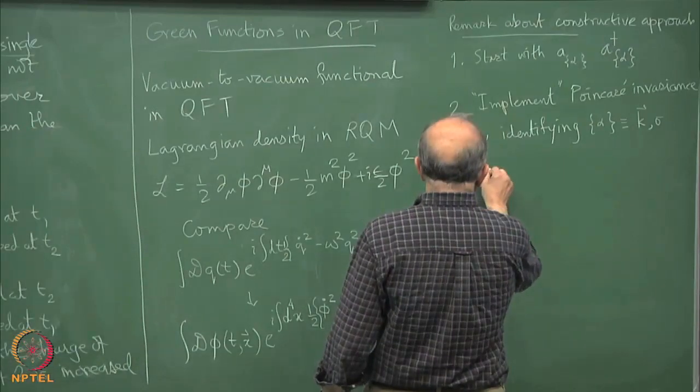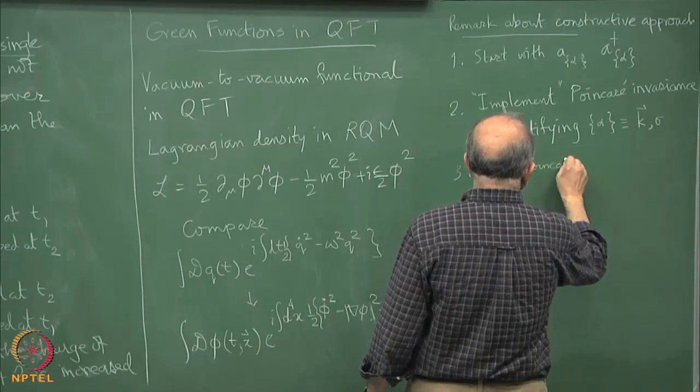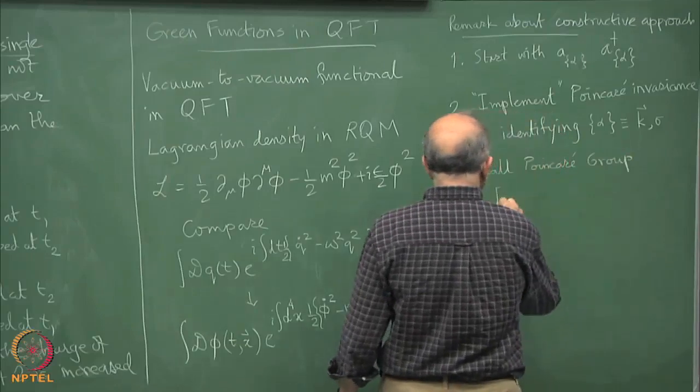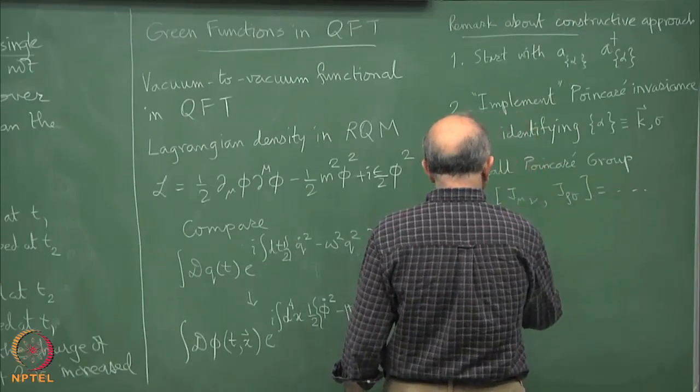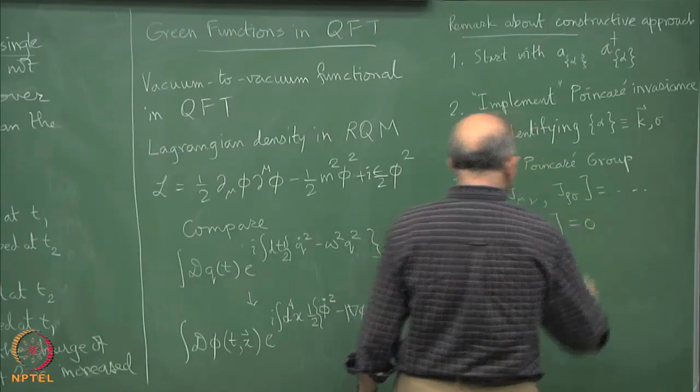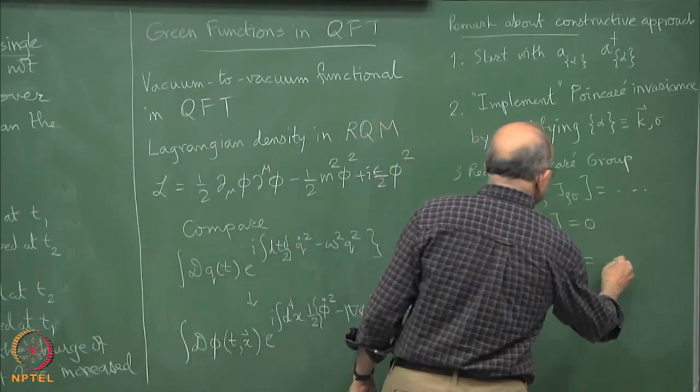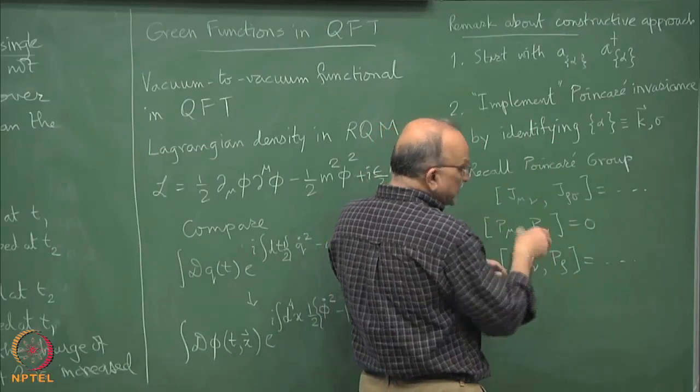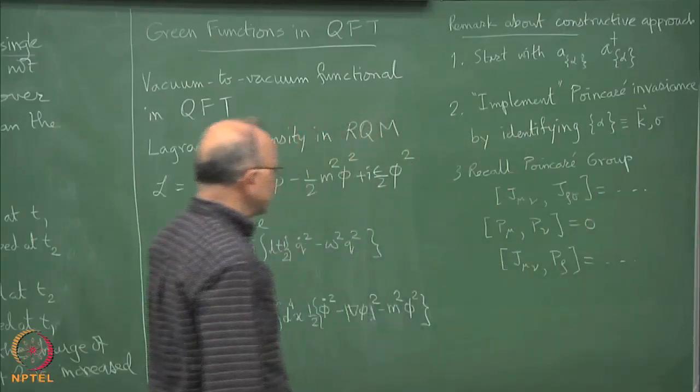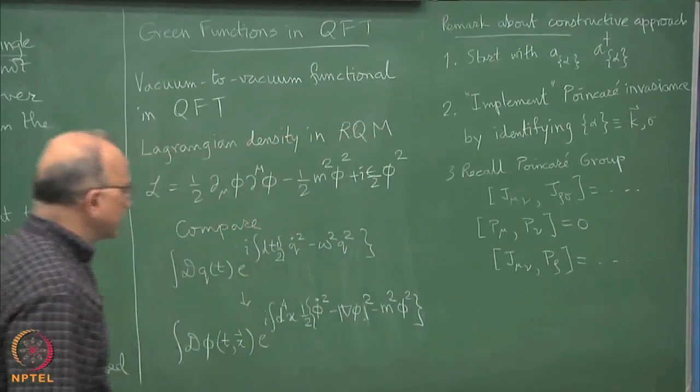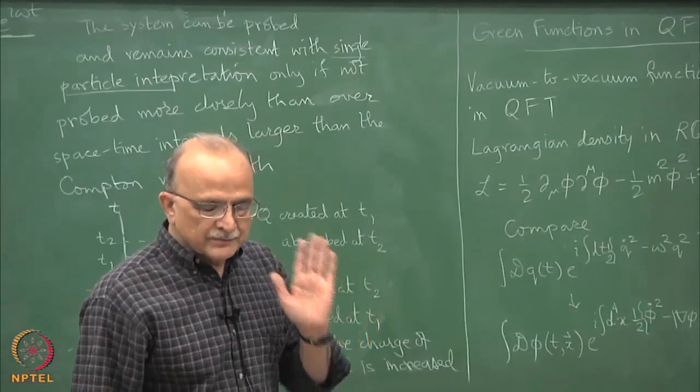Recall in Poincaré group we have all the J mu nu J rho sigma commutators and it also has the P mu P nu equal to 0. And we also have J mu nu P rho commutators. These are the 3D part is the usual rotation group and this is the Lorentz boost. This is the full algebra of the Poincaré group.